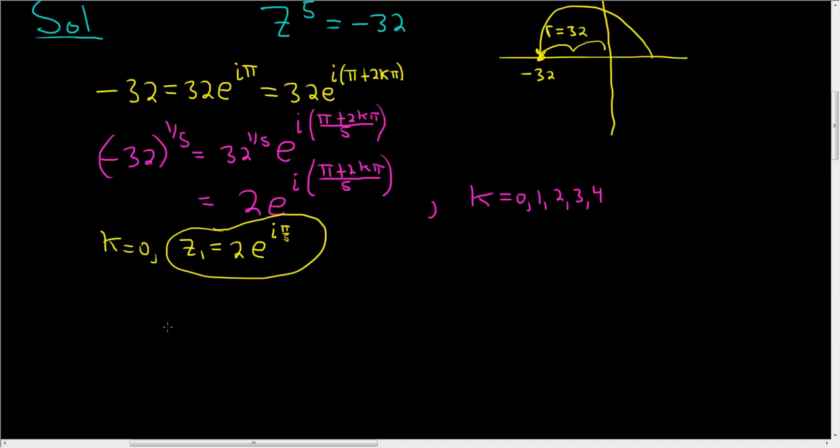When k is 1, we get z2 equals 2 e to the i. Plugging in 1, we get 2 pi plus pi, which is 3 pi over 5. That's another root.